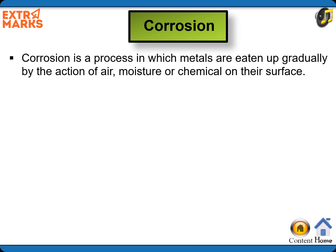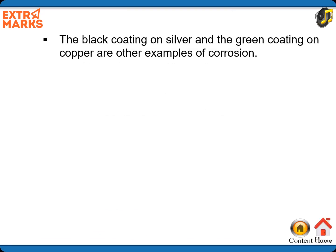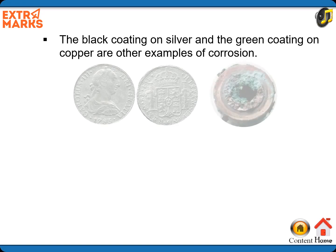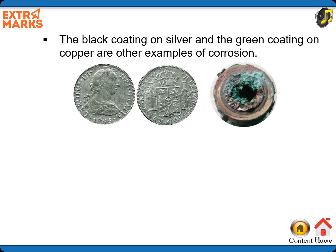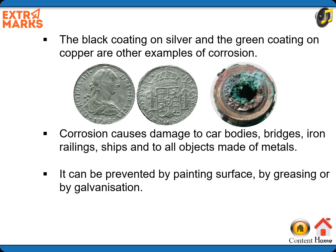Corrosion is a process in which metals are eaten up gradually by the action of air, moisture, or chemicals on their surface. Rusting of iron is an example of corrosion. The black coating on silver and the green coating on copper are other examples of corrosion. Corrosion causes damage to car bodies, bridges, iron railings, ships, and all objects made of metal. It can be prevented by painting the surface, by greasing, or by galvanization.